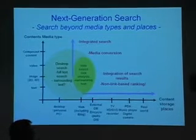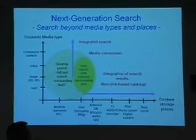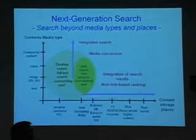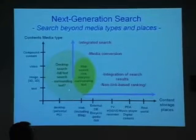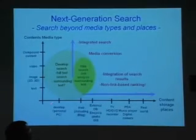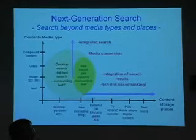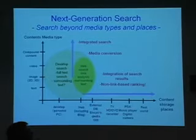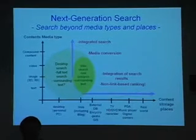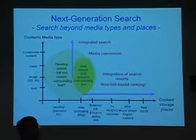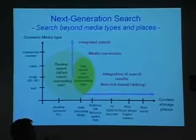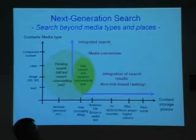The horizontal axis is very interesting. Currently web search engines cover web content including blogs and desktop contents. Conventional web search engines are going from left to right slightly, because some search engines are now able to cover not only web and personal desktop content, but also external databases, encyclopedias, or GIS contents. We are now interested in this area — television hard disks and DVD recorders can store many contents, and sometime we will need a search engine for content stored in hard disk recorders, PDAs, and digital cameras.